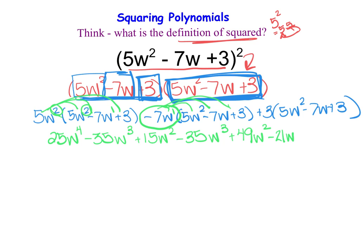Now I have my final distribution here. So we're going to take 3 times 5, which is 15, and the w squared tags along. 3 times negative 7 is negative 21, and the w tags along. And then we have 3 times 3, which is 9. So we've performed all of our multiplications.